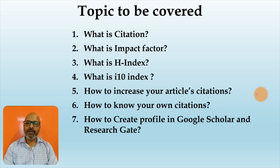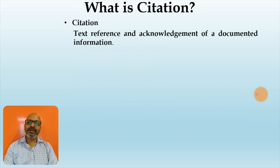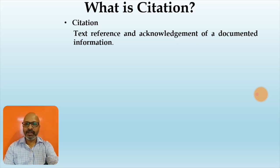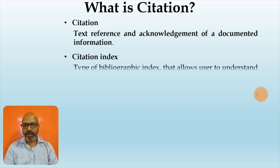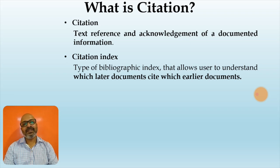When you talk of citations, citations is nothing but a text reference and acknowledgement of a documented information. Whereas citation index, it is a type of bibliographic index that allows users to understand which later document cites which earlier document. We will try to understand this with the help of an example.